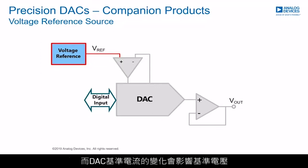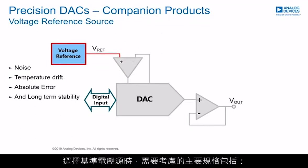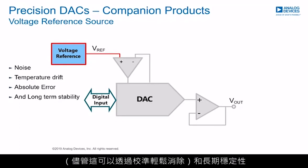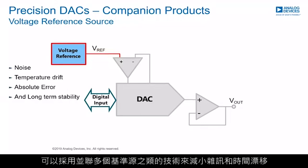Some reference sources will drift if the reference current is not constant, and variation in the DAC reference current will affect the reference voltage. The key specifications to consider when selecting the reference source are noise, temperature drift, absolute error (although these can be easily calibrated out), and long-term stability. Techniques such as connecting multiple references in parallel can be employed to reduce noise and drift over time.